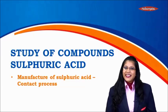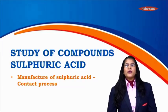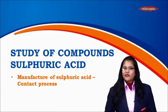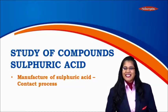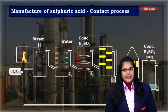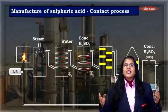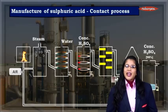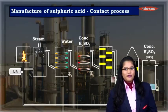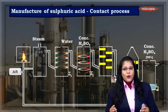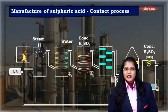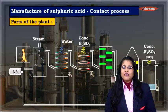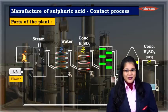Hello students. In this module we are going to study the large scale manufacture of sulphuric acid using the contact process. As we can see on the screen is the setup for the plant of manufacturing of sulphuric acid which is used in the industries. Let's study each and every part of the plant in detail.